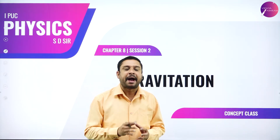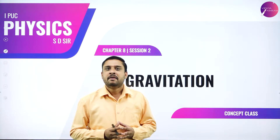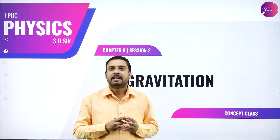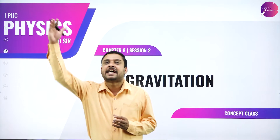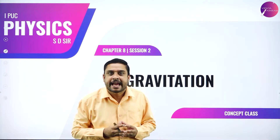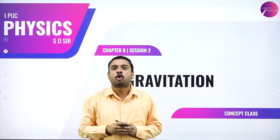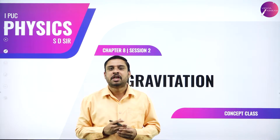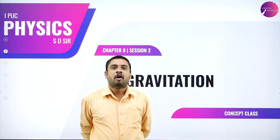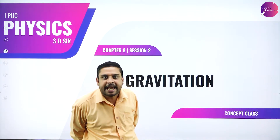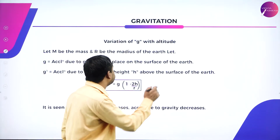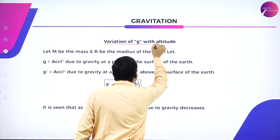Continuing today's discussion, we will understand how acceleration due to gravity varies as we go away from the surface of the earth, how it varies deep inside the core of the earth, at the equator, and at the poles. Today's discussion will cover the variation of acceleration due to gravity with different parameters. The first thing we study is the variation of g.